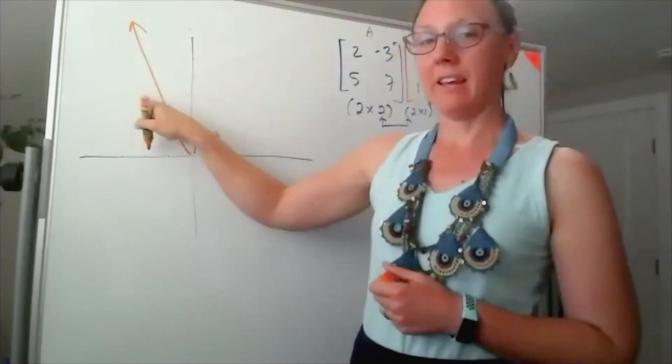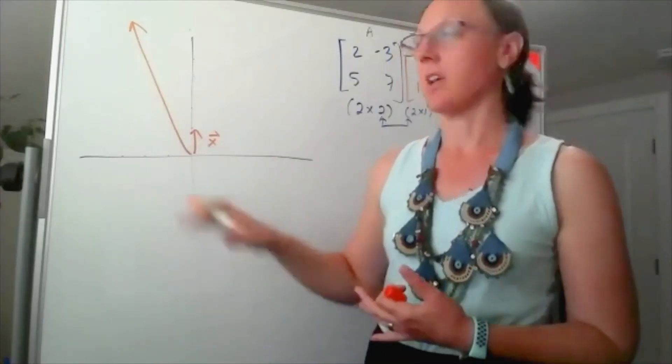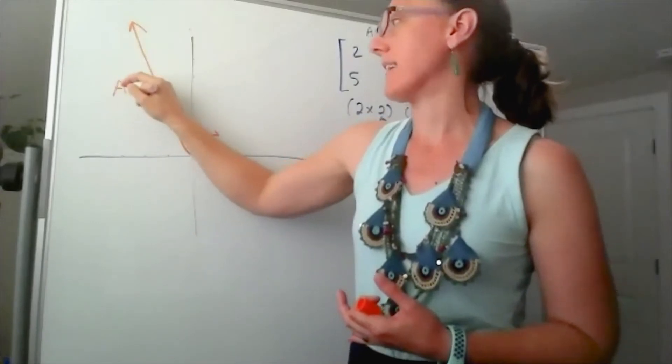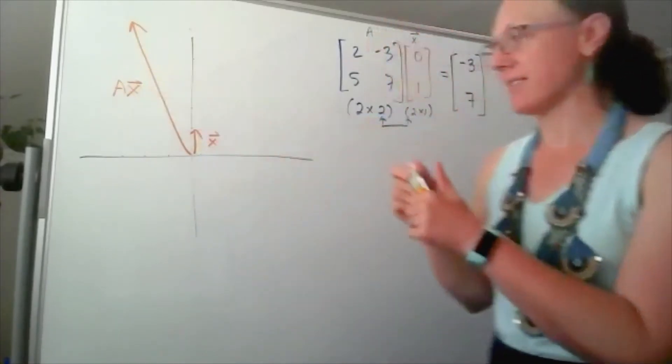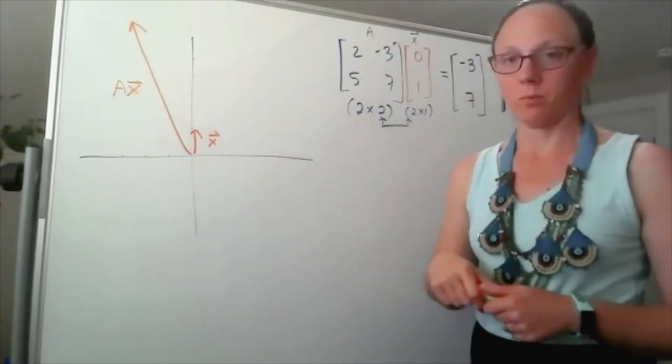And we would write this as A times x. So that's the result when I take that x vector and multiply it by A.